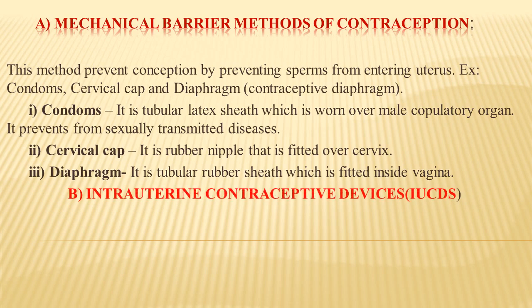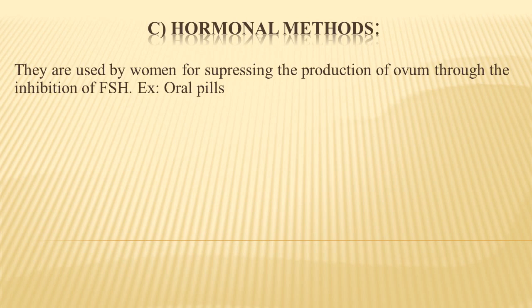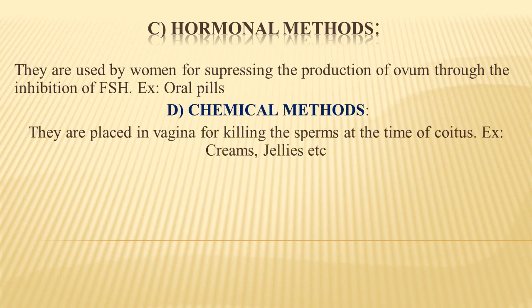Intrauterine contraceptive devices, commonly known as IUCDs, are devices made of plastic, metal, or a combination, inserted into the uterus to prevent insemination and stop sperms from entering the fallopian tube. The most common type is the copper-T, which functions for about 3 to 5 years. The hormonal method involves taking oral pills or administering the FSH hormone to suppress the production of ova. The chemical method involves using medicated creams or jellies placed in the vagina to kill sperms during coitus, preventing fusion of the gametes.